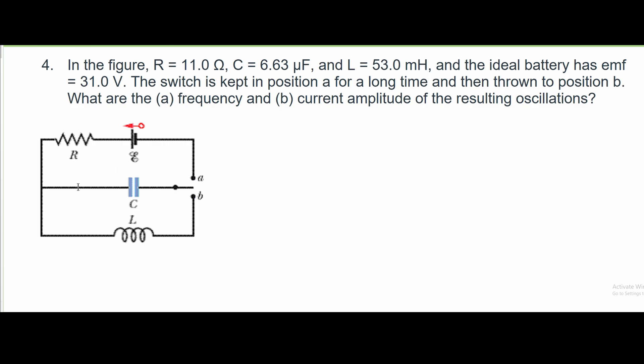In the given figure, we have R equal to 11 ohms, C equal to 6.63 microfarads, and L equal to 53 millihenries. The ideal battery has EMF 31 volts.